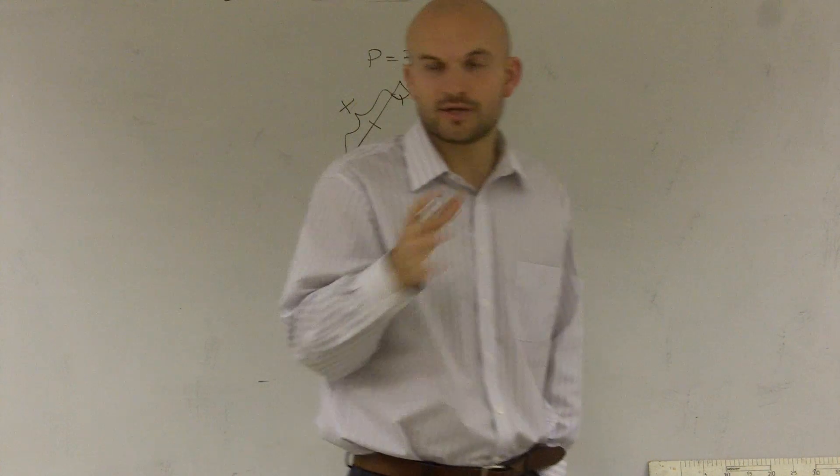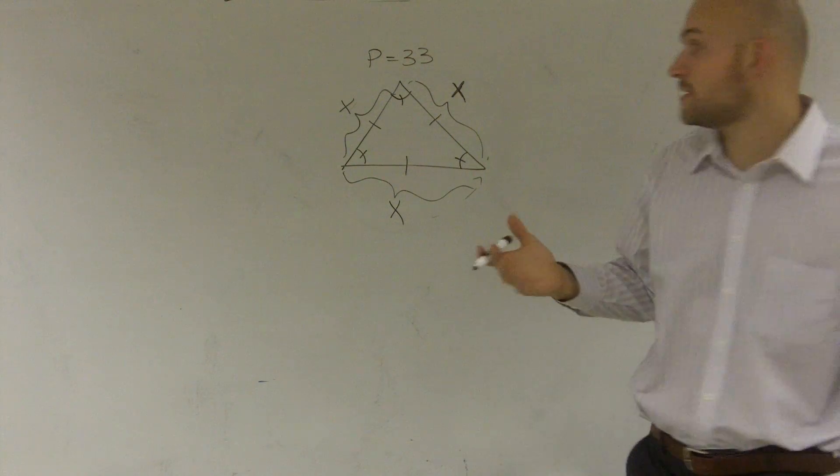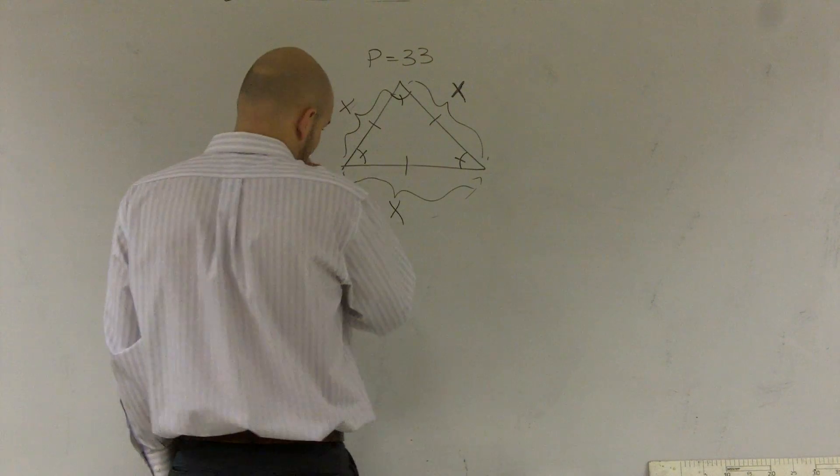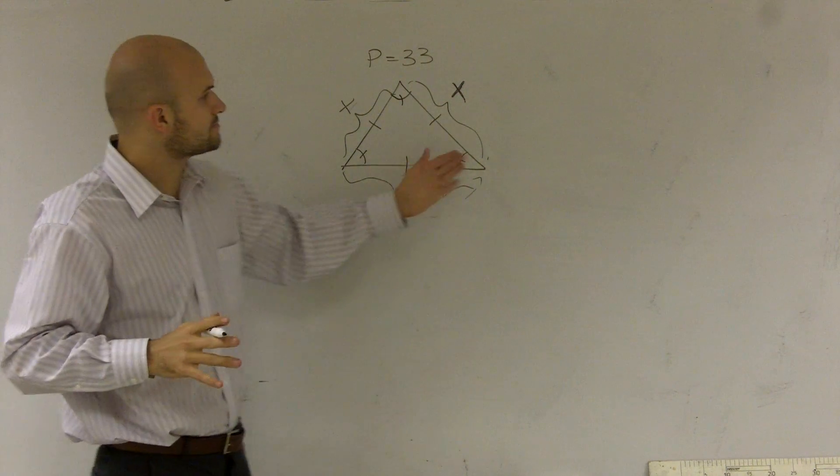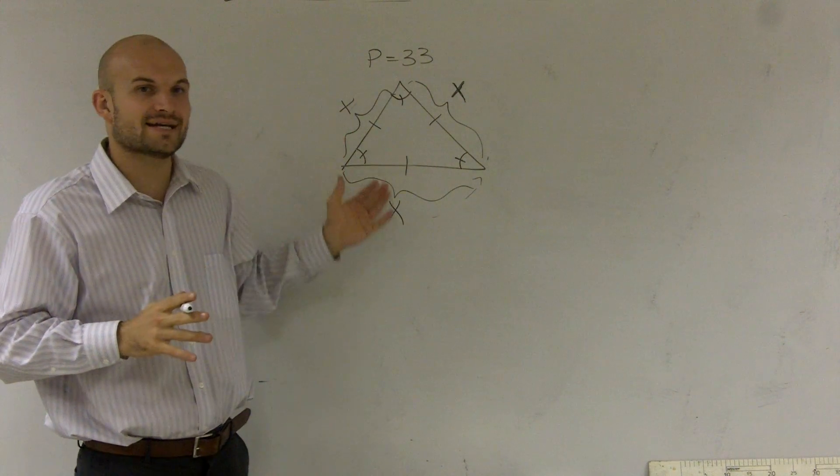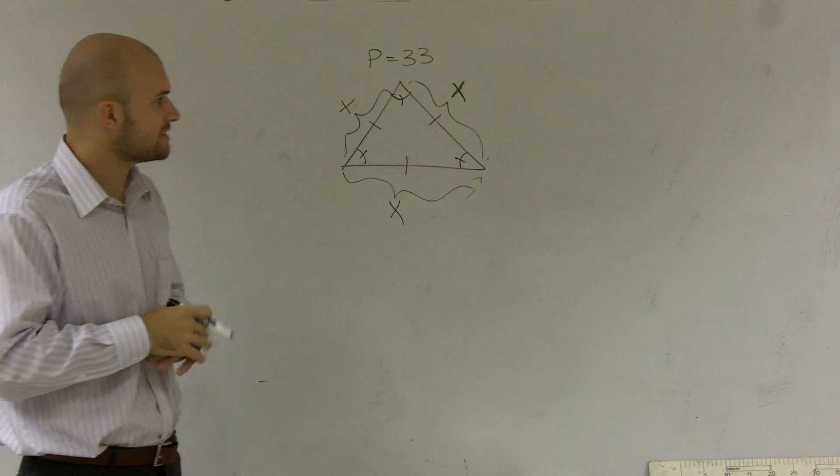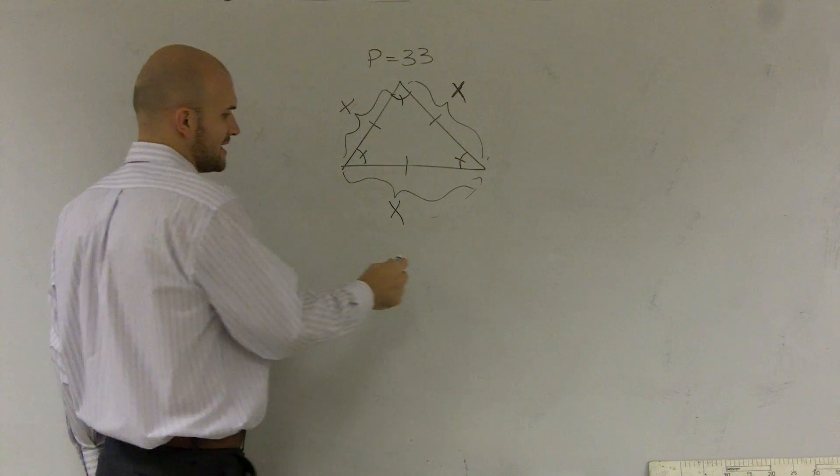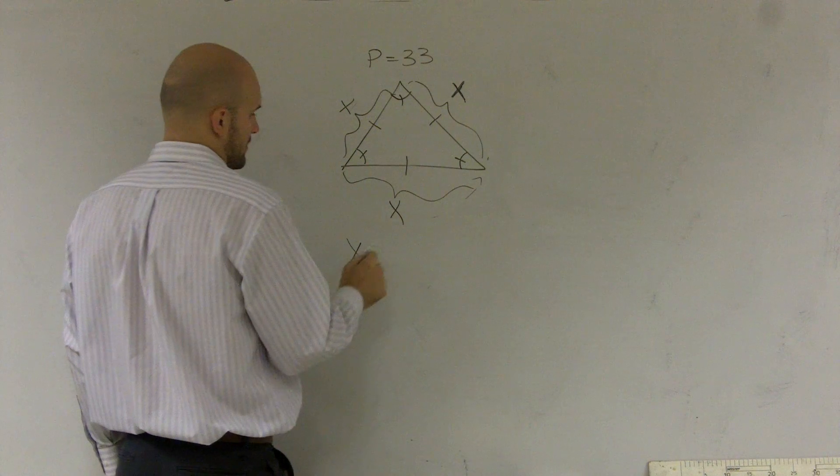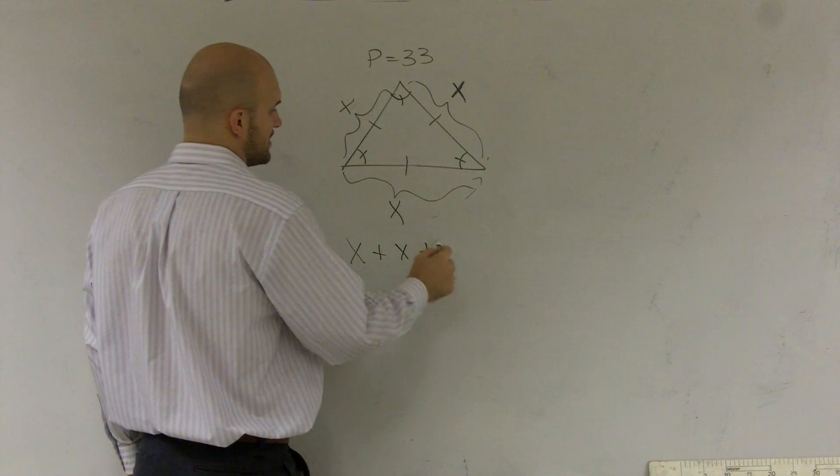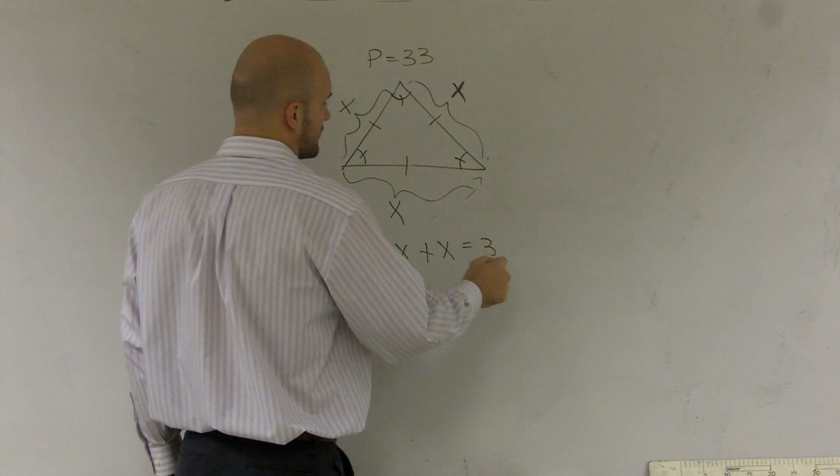The next thing you need to know is what is the definition of perimeter? The definition of perimeter is all the sides added up, the addition of all the sides of an object, the distance around an object. So you take x plus x plus x equals 33.